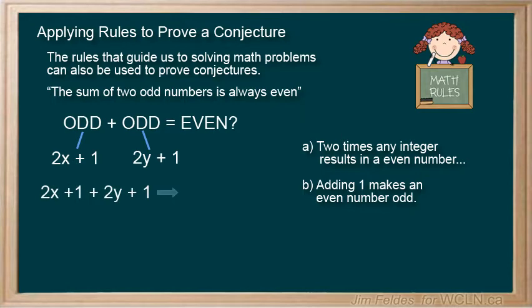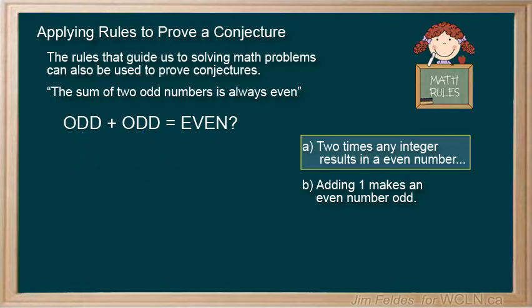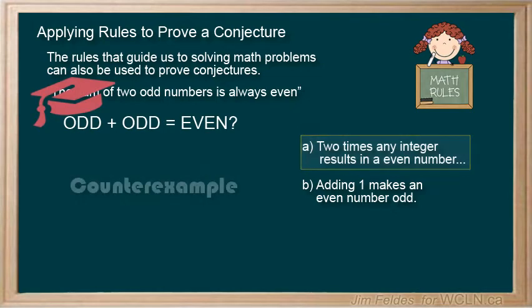When we add these two expressions, we get 2x plus 2y plus 2. Finally, we can see we can take out the common factor of 2. Since x, y, and 1 are all integers, they all add up to an integer multiplied by 2. This takes us back to our first statement that any integer times 2 has to be even. Once a conjecture is proven, it graduates to being a fact, and we can stop looking for counter-examples.